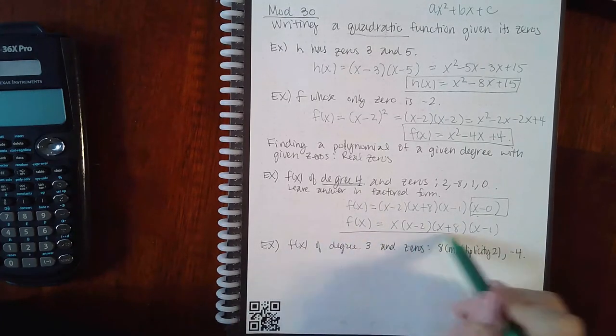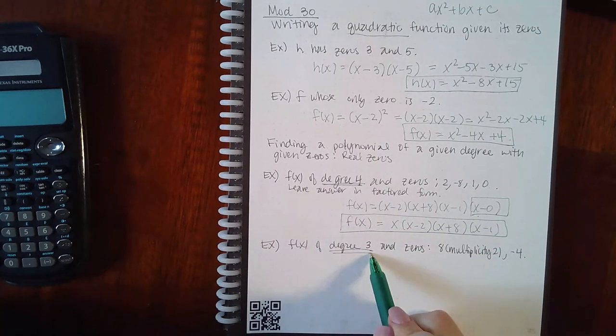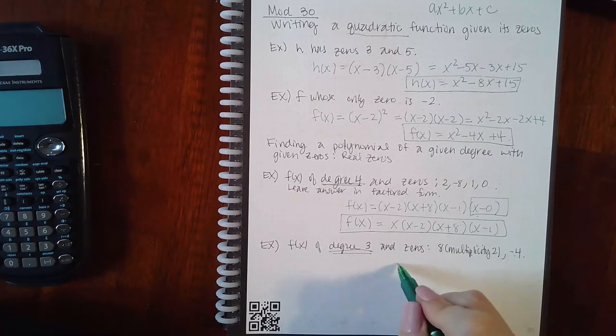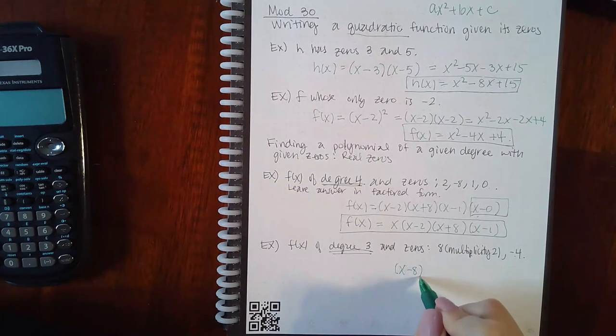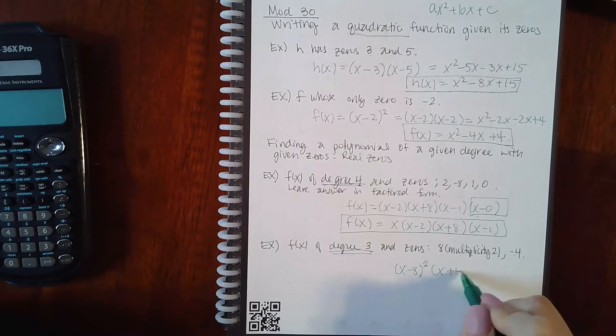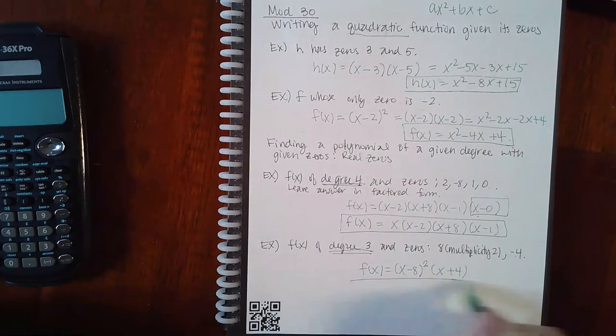Here we're doing a degree of 3. It says 8 with multiplicity 2 and negative 4. You have x minus 8 but with multiplicity of 2, and then x minus a negative 4 gives you x plus 4. Leave it in factored form.